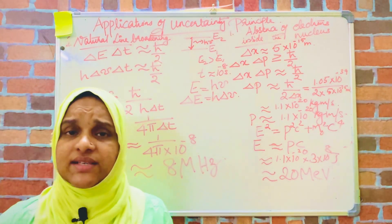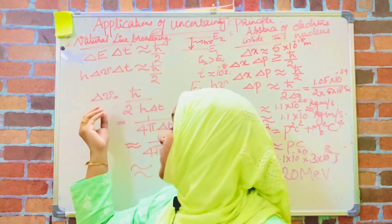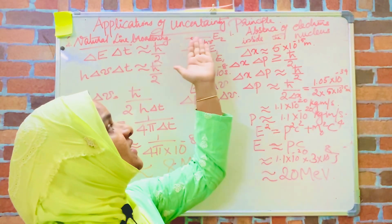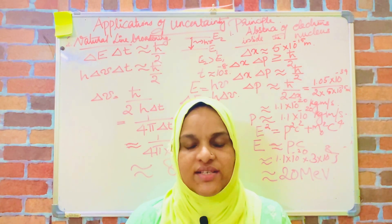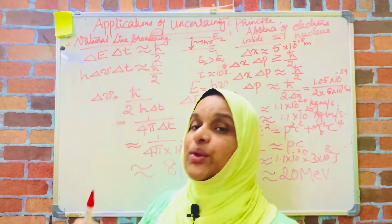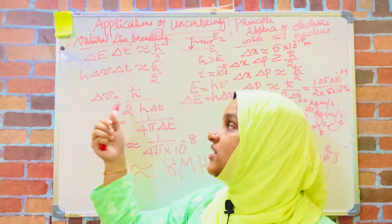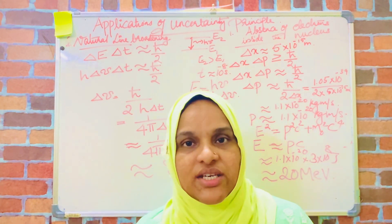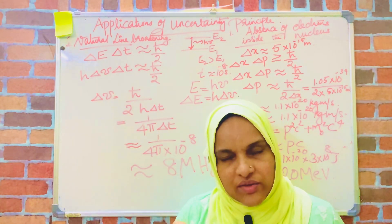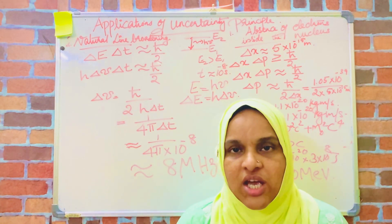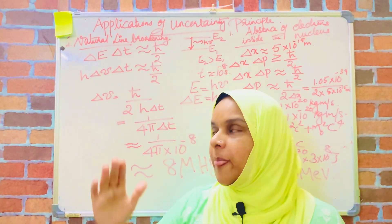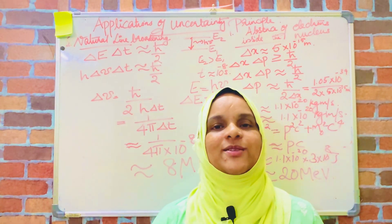This 8 megahertz represents the broadening in the frequency of a spectral line emitted when an atom jumps from the excited state to the ground state. This delta nu represents the inaccuracy in the frequency of the emitted radiation — it is the irreducible limit of accuracy with which the frequency of the emitted radiation can be measured. This is the minimum broadening in frequency, and this phenomenon is known as natural broadening, which is explained on the basis of the uncertainty principle.